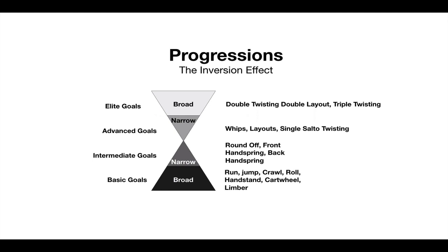When you get to the elite goals, it goes back to broad, because you've got double twisting, double layouts, triple twisting. There's so many more combinations of how you put everything together that the options open back up. This is how the skills progress - starts broad, goes narrow, then goes back to broad. Moving through this process is what progressions are helping guide the students to.